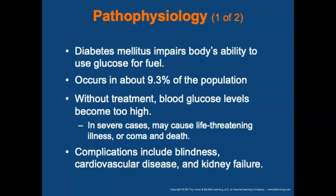Regarding the pathophysiology of diabetes: diabetes mellitus is a disorder of glucose metabolism. The body is impaired in its ability to get glucose into the cells to be used for energy. It affects about 9.3% of the population. Without treatment, glucose levels become high, and in severe cases may cause life-threatening illness, coma, or death. If not managed well, it can have severe complications such as blindness, cardiovascular disease, and kidney problems.